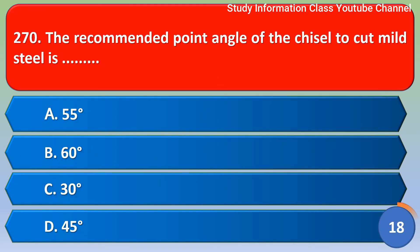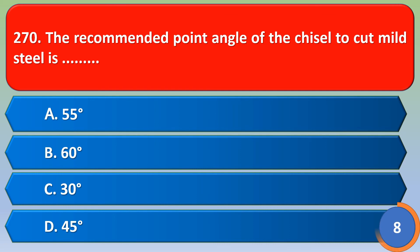Next question: the recommended point angle of the chisel to cut mild steel is — Option A: 55 degrees, Option B: 60 degrees, Option C: 30 degrees, Option D: 45 degrees. The right answer is Option A, 55 degrees.